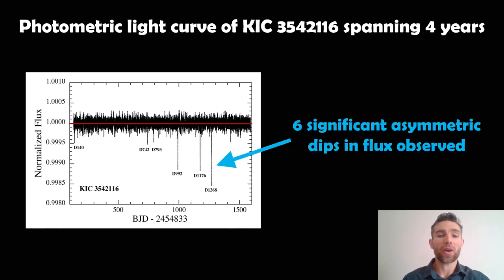Now this is an example of a star which actually had, I think it was six significant asymmetric dips in flux or brightness. And this star was KIC 3542116. Not a very exciting name, they never are really. And this is the light curve for four years. Now the light curve is just the brightness of the star or the flux given out from the star as a function of time. So this is four years worth here.